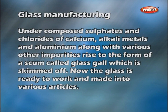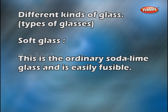Undecomposed sulphates and chlorides of calcium, alkali metals and aluminium, along with various other impurities, rise to form a scum called glass gall, which is skimmed off. Now the glass is ready to work and made into various articles.